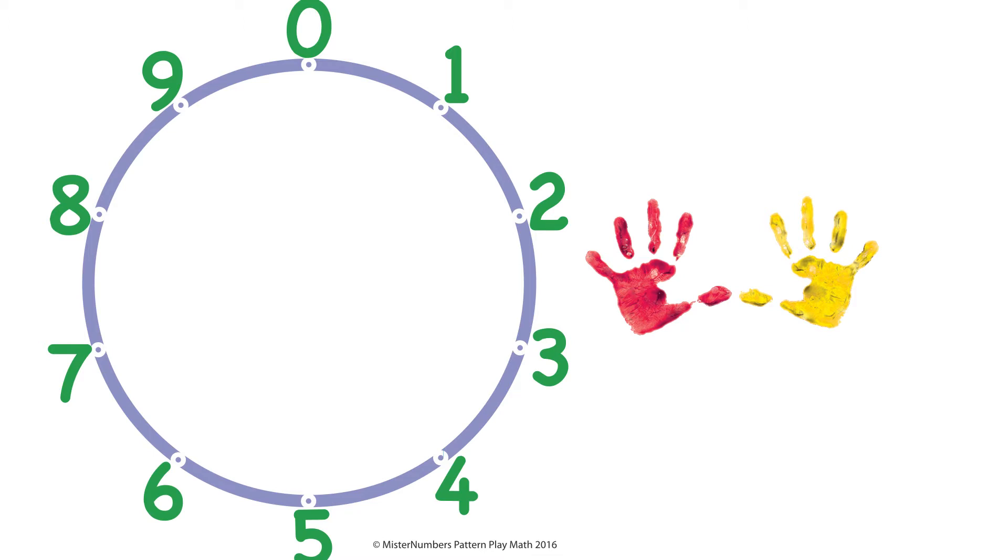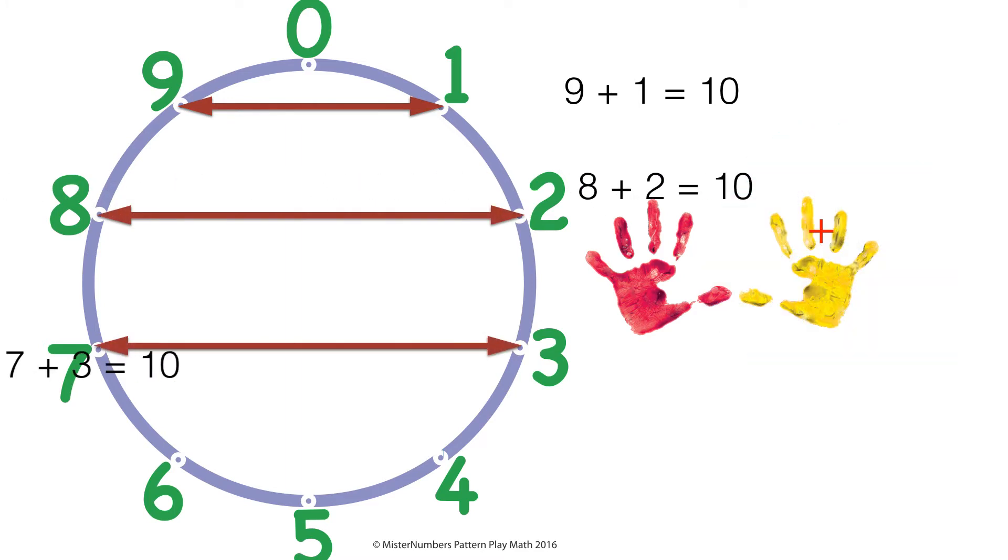Let's see what patterns show up in the pairs of numbers that add up to ten. Right next to zero are nine and one, right across from each other, adding to ten. And then down below that are eight and two, also adding up to ten. And seven and three add up to ten, and six and four add up to ten.